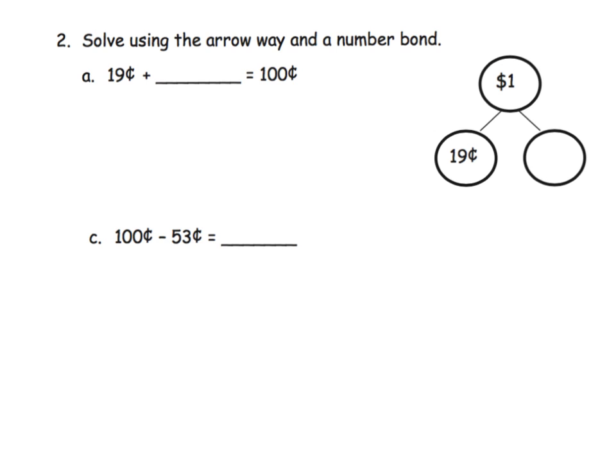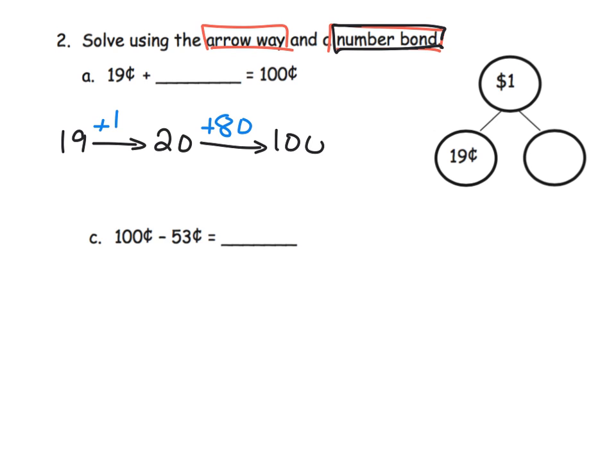This is also a return to the number bond that we did in previous modules. Let's start with that 19 and what do we need to add? Let's add 1, that bumps us up to 20, and then we can jump straight to 80—80 cents gives us 100.